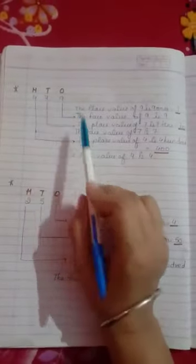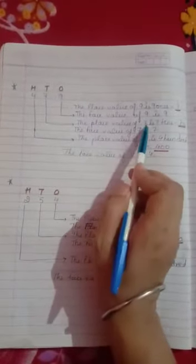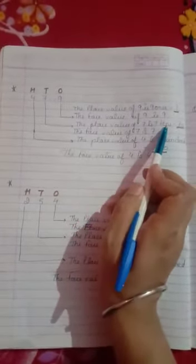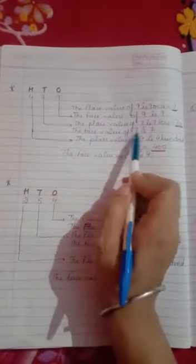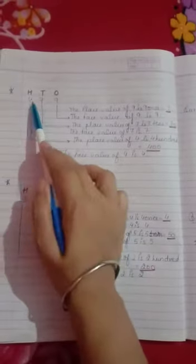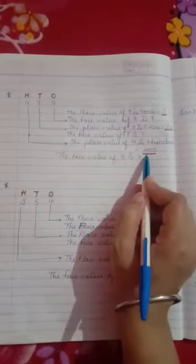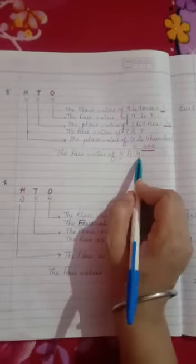7 is in the 10's position. The place value of 7 is 7 tens, which equals 70. The face value of 7 is 7. 4 is in the 100's place. The place value of 4 is 400. The face value of 4 is 4.